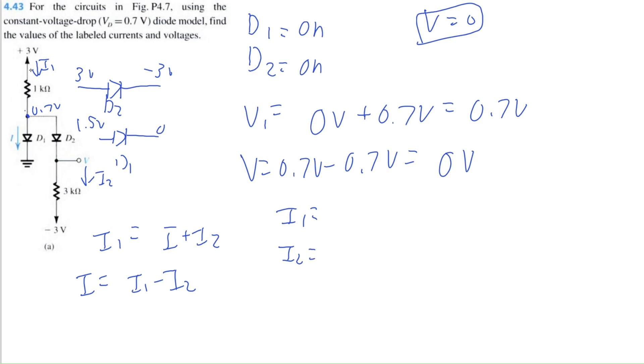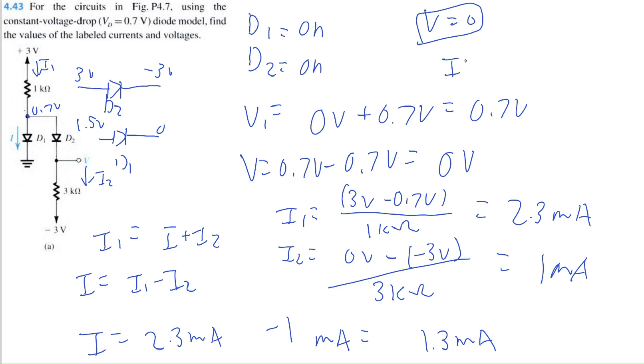So now we just need to solve for I1 and I2. Okay, so I1 we could just use this nodal analysis. We're going from 3 volts to 0.7 volts divided by the resistance 1 kilo ohm, and that is equal to 2.3 milliamps. I2, we're going from 0 volts minus negative 3 volts divided by 3 kilo ohms. That is equal to 1 milliamp. So therefore I is equal to 2.3 milliamps minus 1 milliamp, that is equal to 1.3 milliamps. That is the second value.